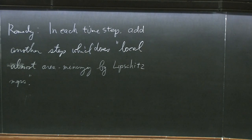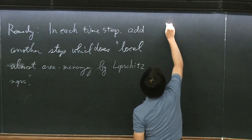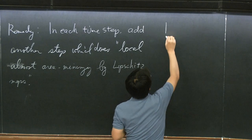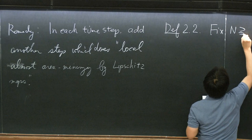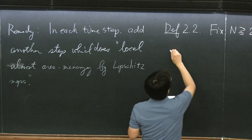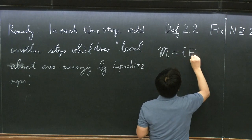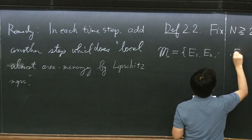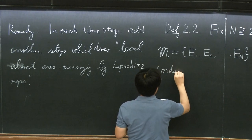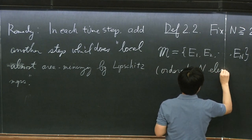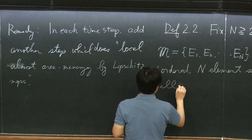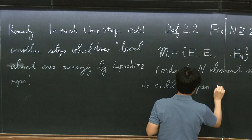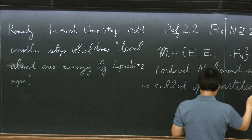Instead of working with the previous setup, I want to be very specific about what type of situation we are working with. Let me give the precise definition of the so-called open partition. Fix this number N, which is the number of moving domains. Script M, in my talk today, is an ordered N-element set, and this is called an open partition of N elements.